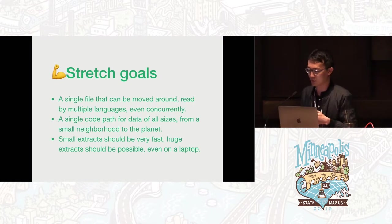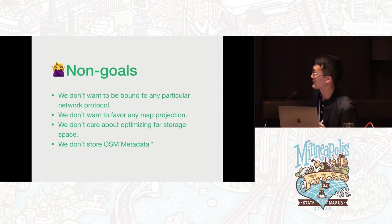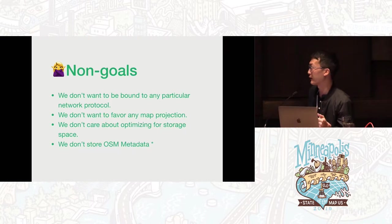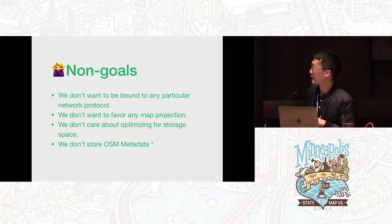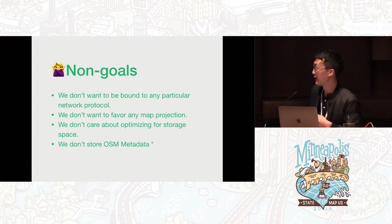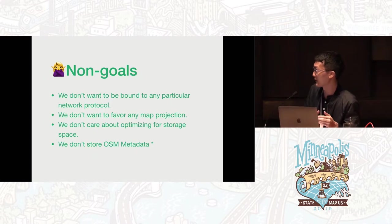Small extracts or areas should be very fast; huge ones should be possible even on a simple laptop computer. You should not need a server with 64 gigs of RAM to do a planet-scale operation. There are also some non-goals and compromises. We don't want to be bound to talking to this over a network, we don't want to favor any map projection, and we don't really care about optimizing for storage space because storage is actually pretty cheap right now. A one-terabyte external SSD is about $150. On hosted services like Amazon, storage is pretty cheap compared to getting more RAM. So the design is more towards performance and less towards saving space.